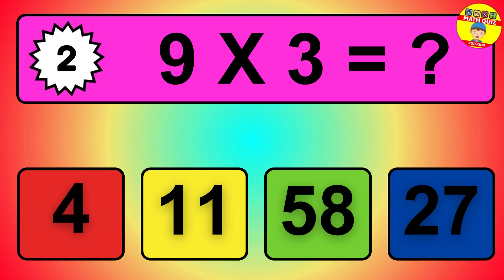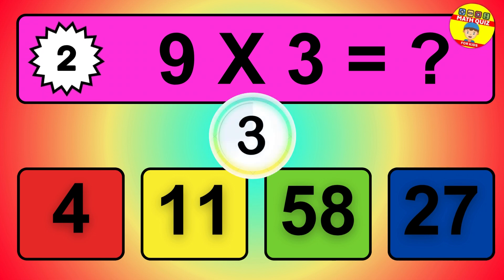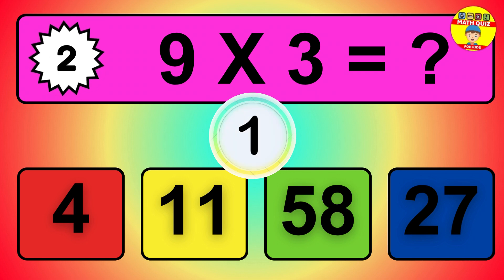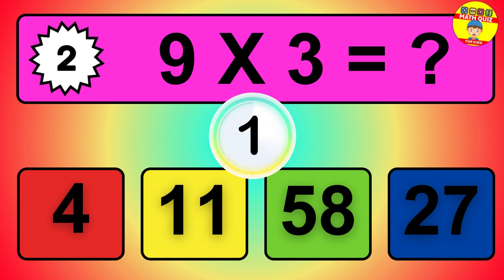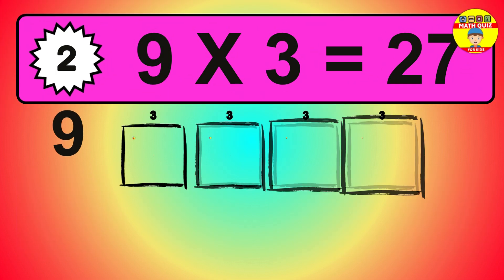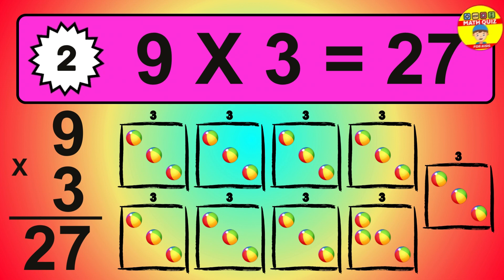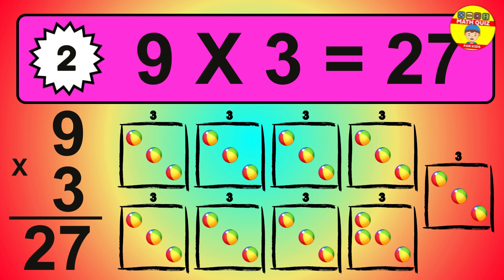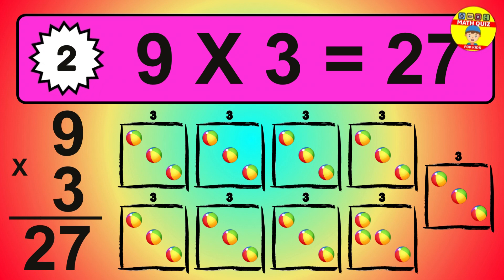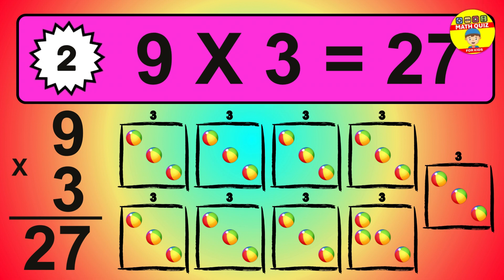Question 2. 9 times 3 equals what? The answer is 9 times 3 is 27. To calculate, we have 9 groups with 3 balls each one. So how many balls do we have? 27 balls.